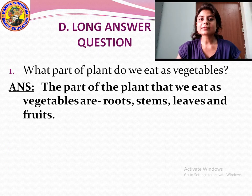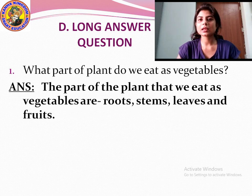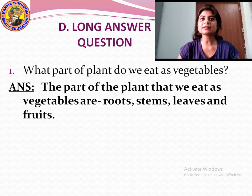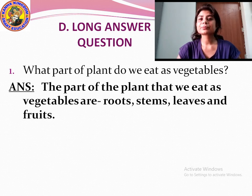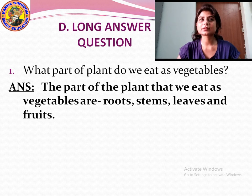Now our last question — long answer question: What part of the plant do we eat as vegetables? The answer is: the parts of the plant that we eat as vegetables are roots, stems, leaves and fruits.